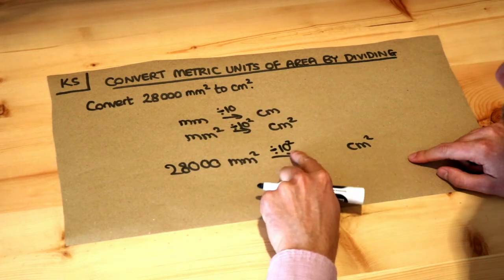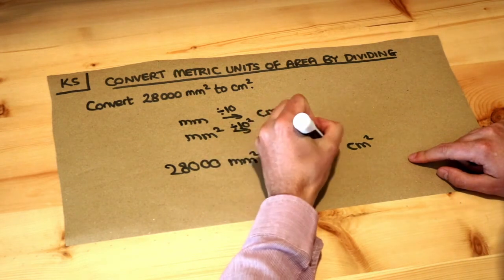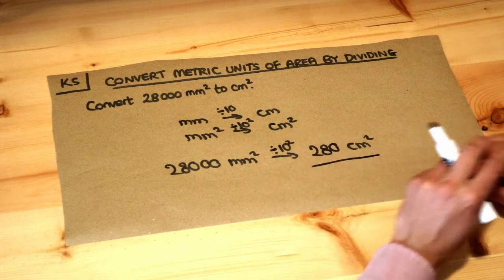So we're dividing by 100. That gets rid of two of the zeros, leaving 280 centimetres squared. And that's the final answer.